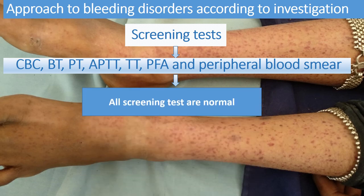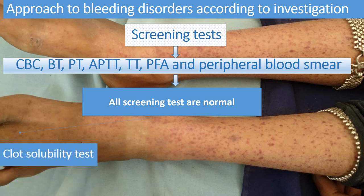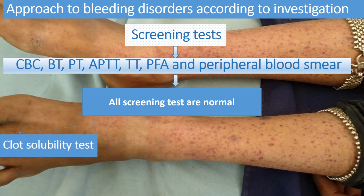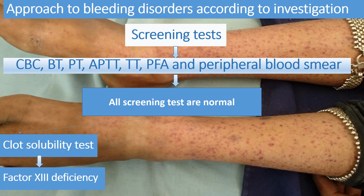If all screening tests are normal, perform the clot solubility test, because in factor 13 deficiency, PT, APTT, and TT will all be normal. The clot solubility test using 5M urea should be performed to rule out factor 13 deficiency.